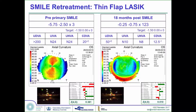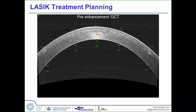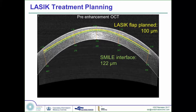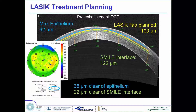Topography looks nice and regular and symmetrical. Here's the pre-enhancement OCT, showing that the SMILE interface was at a minimum of 122 microns, even though it had been programmed to 135 microns. The LASIK flap that we planned would therefore be at 100 microns, and the maximum epithelium measured by OCT was 62 microns within the central zone of the cornea.